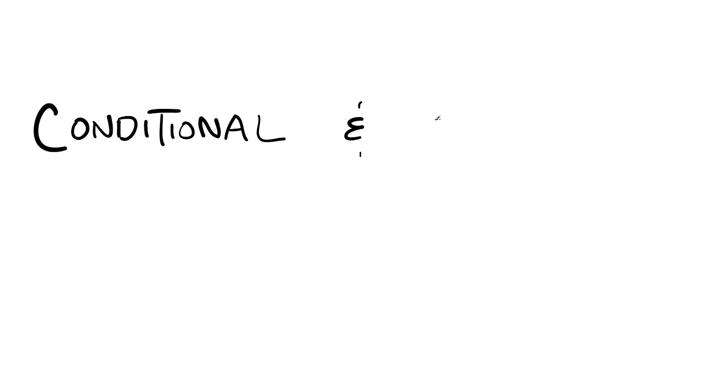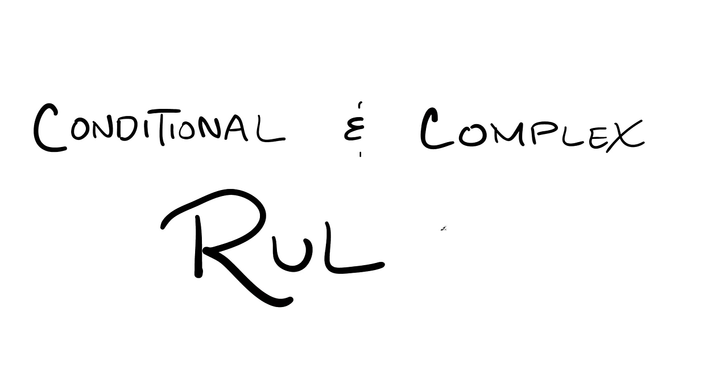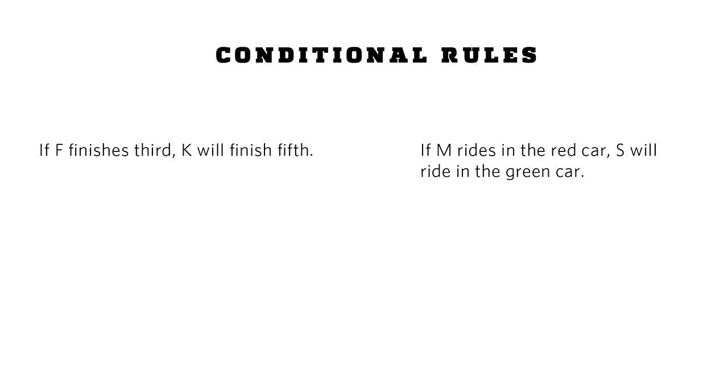Finally, some of the rules are complicated by being made conditional or complex. Some rules are conditional. That is, instead of just telling us that something is true, they tell us that if one thing is true, then another thing will be true. Here are some examples of conditional rules.